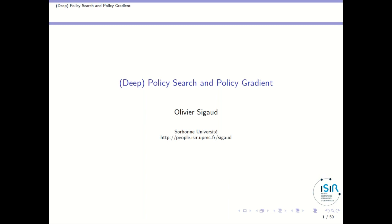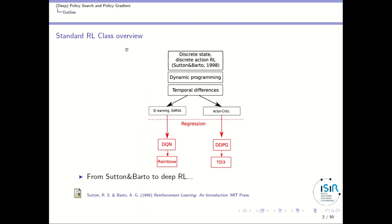Welcome to this class about policy search and policy gradient methods in the context of deep reinforcement learning algorithms. There are two ways to introduce continuous action deep reinforcement learning algorithms. The first way is to follow the Sutton and Barto book: starting from discrete state and discrete action RL, presenting dynamic programming, then temporal difference algorithms, leading to Q-learning and SARSA, DQN, and then actor-critic techniques leading to DDPG and its extension TD3.